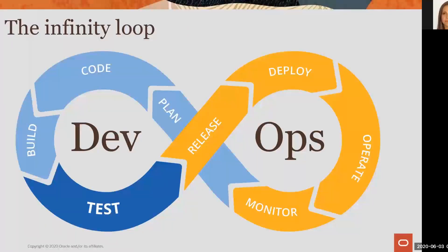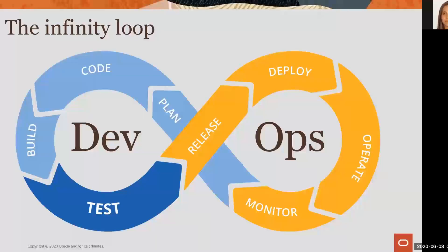They start by planning their new code and new functionalities. They code it, build it, test it, release, deploy, operate, and monitor. As you can see, this infinite loop involves a collaboration between development and operations.